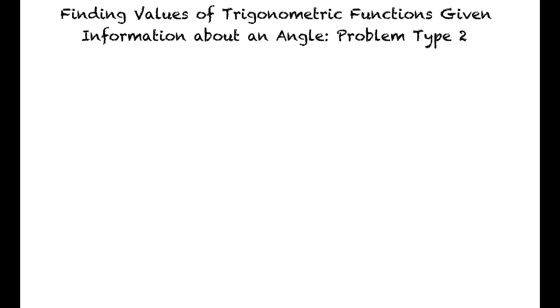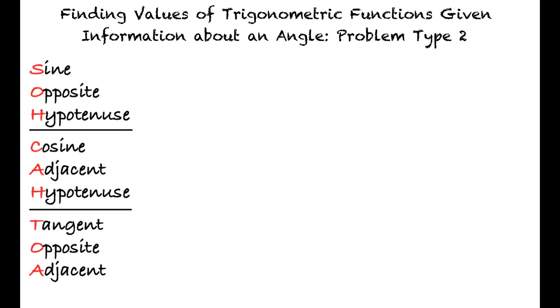So we will be given a trigonometric ratio, and we can use the mnemonic SOHCAHTOA to determine the two sides of the right triangle given in the problem, right? Exactly.